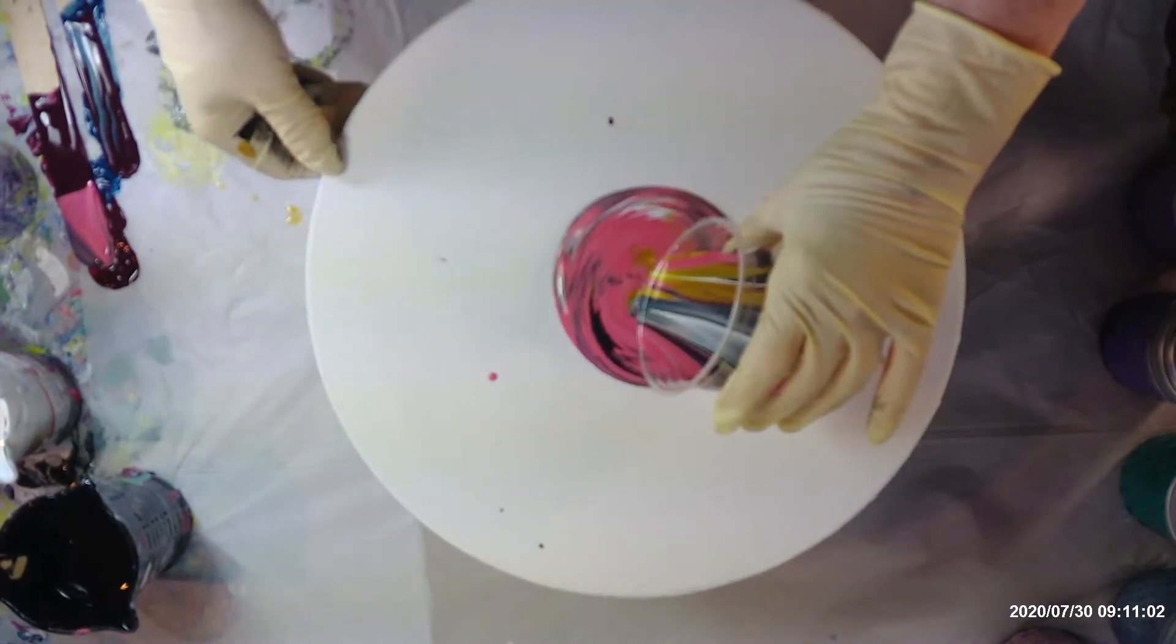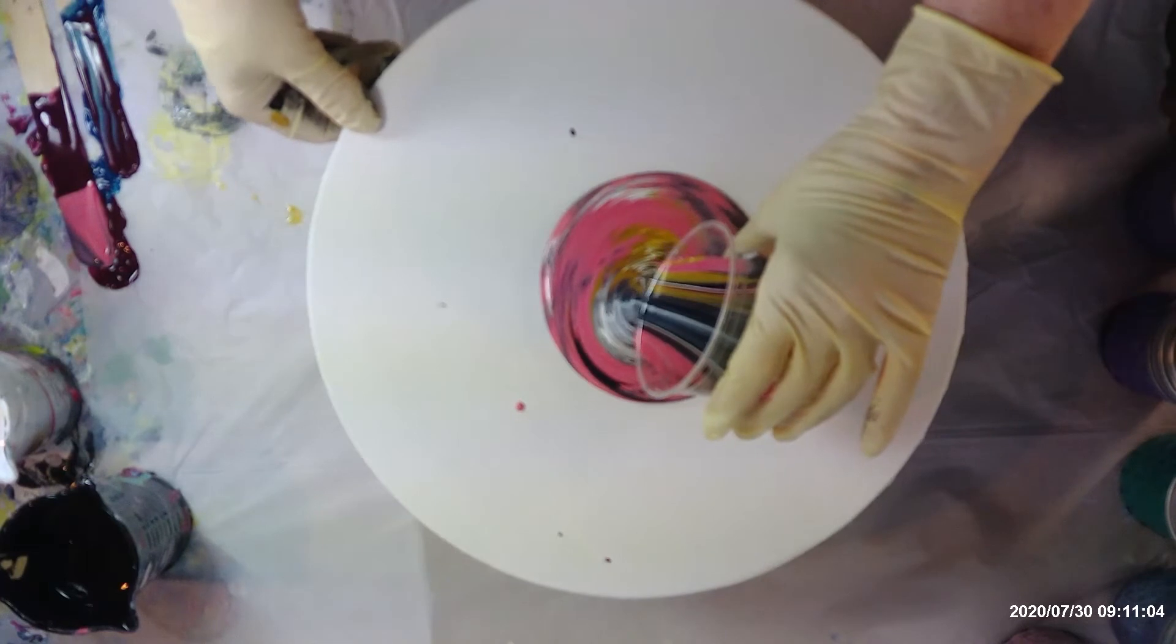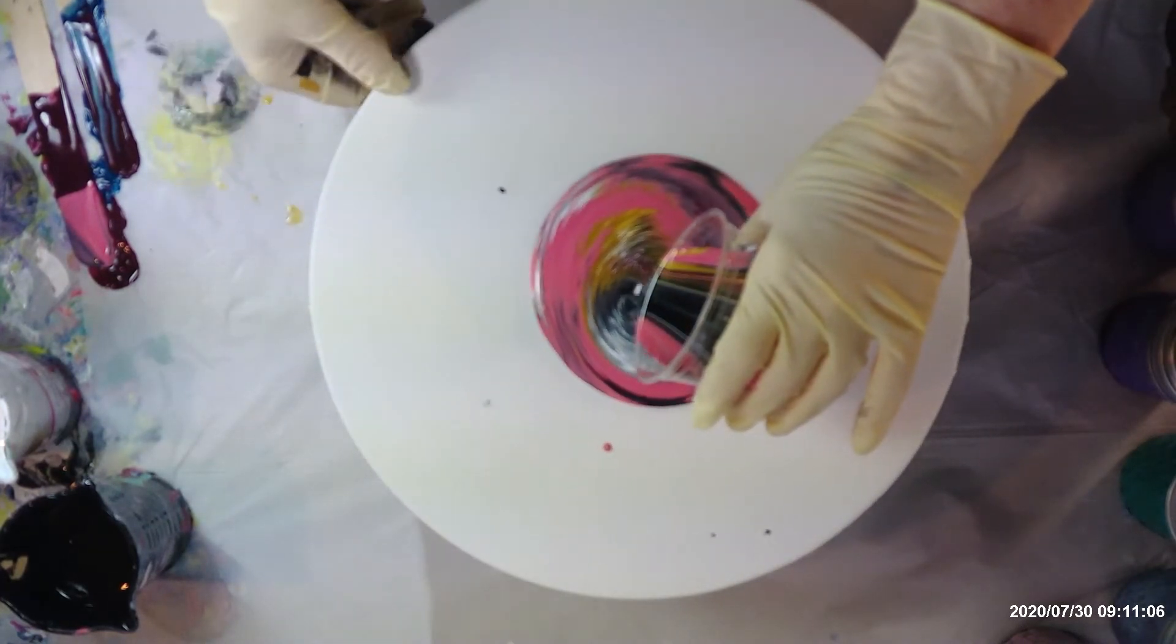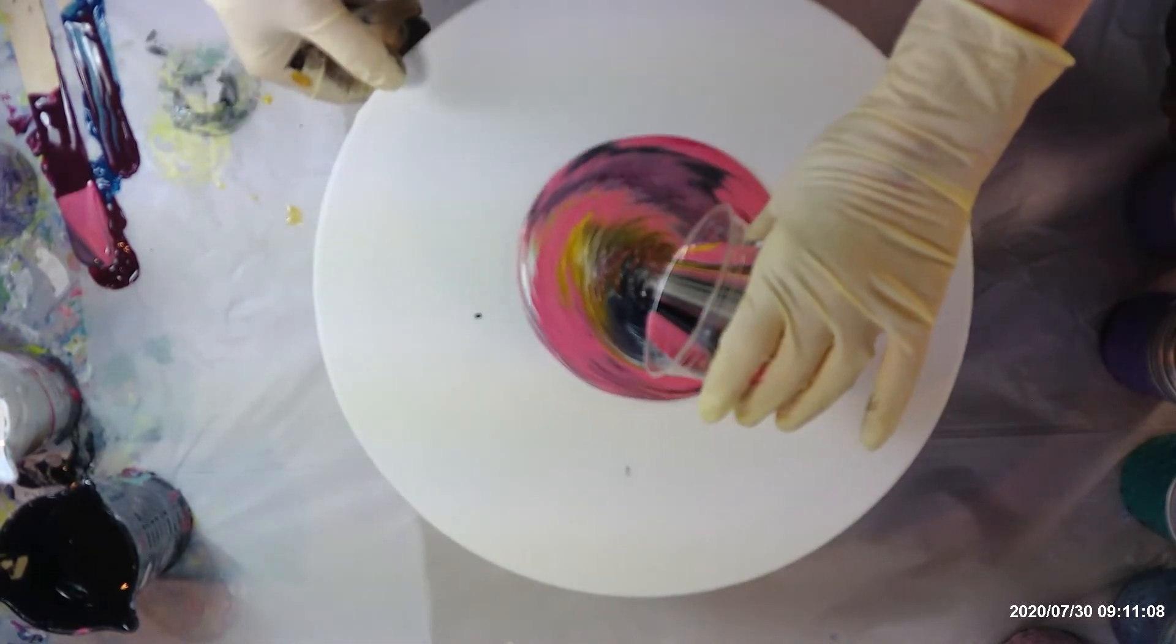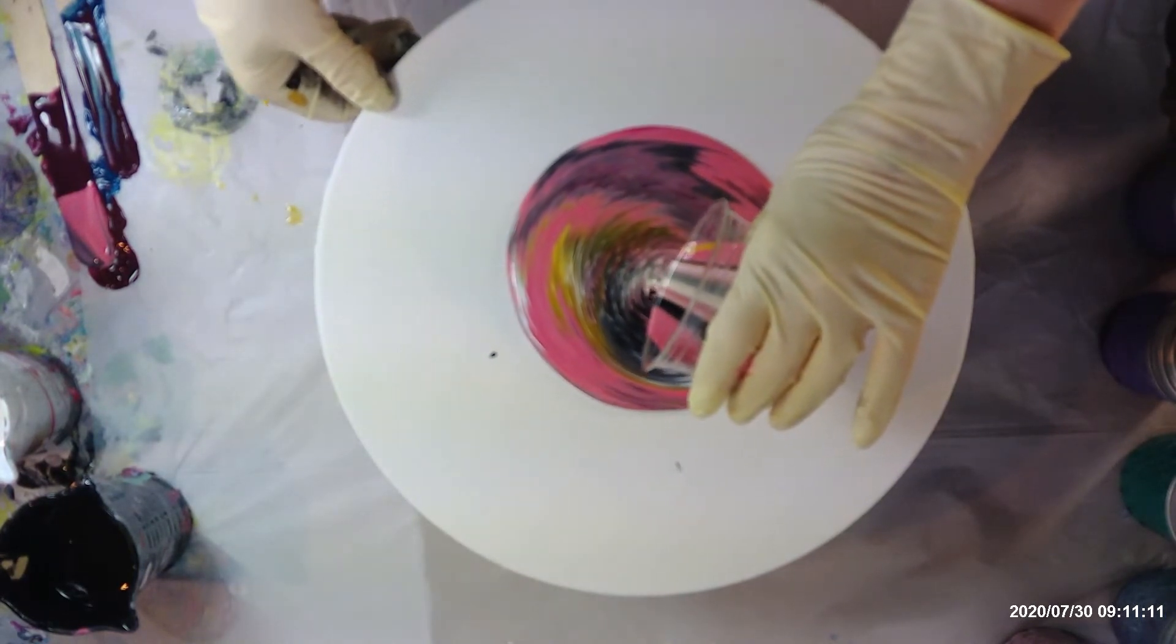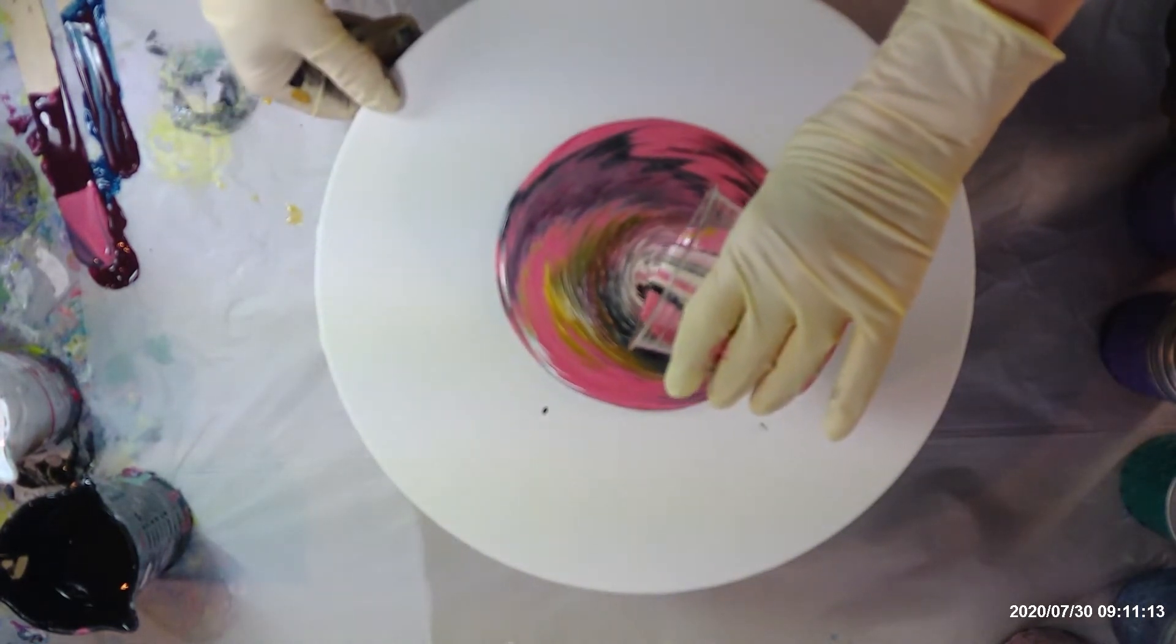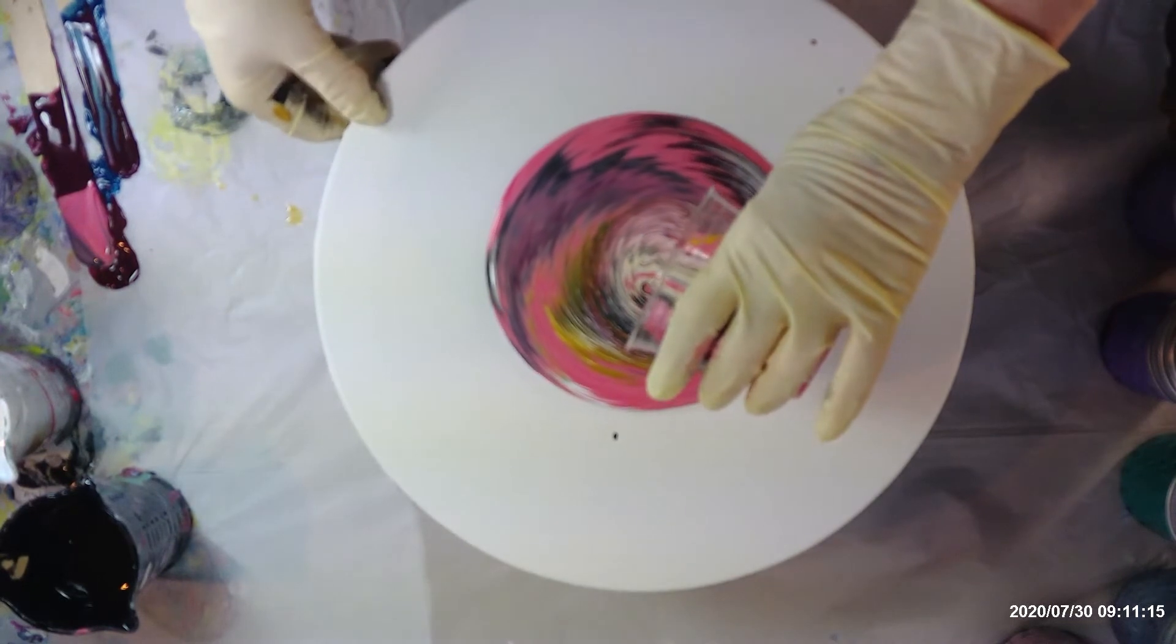Remember, the first color, the last color that you put in is going to be the ring on the outside. It's going to be stretched off if you're doing a ring pour like this.